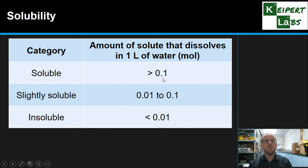Something that dissolves more, you can make solutions of more than 0.1 moles in a liter are soluble. If we've got compounds that can dissolve less than 0.01 moles in a liter, we call them insoluble.